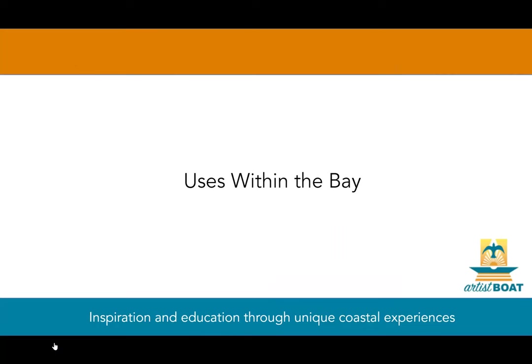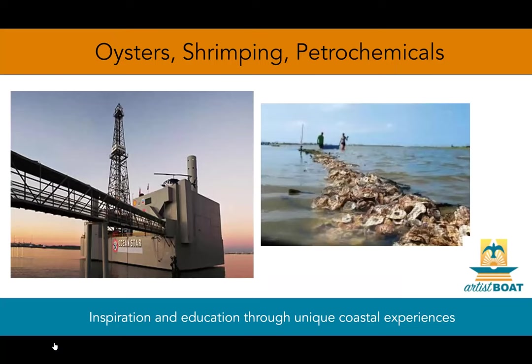The bay has many uses. Galveston Bay provides 70 percent of oyster landings and 45 percent of the recreational catches in the state each year. Shrimping is a vital industry, as is recreational boating and fishing. Almost 5,000 ships annually pass through the bay to the Port of Houston. Fifty percent of all U.S. petrochemicals are produced along the shore of Galveston Bay, which accounts for about three billion dollars in direct and indirect economic benefit to the region each year.